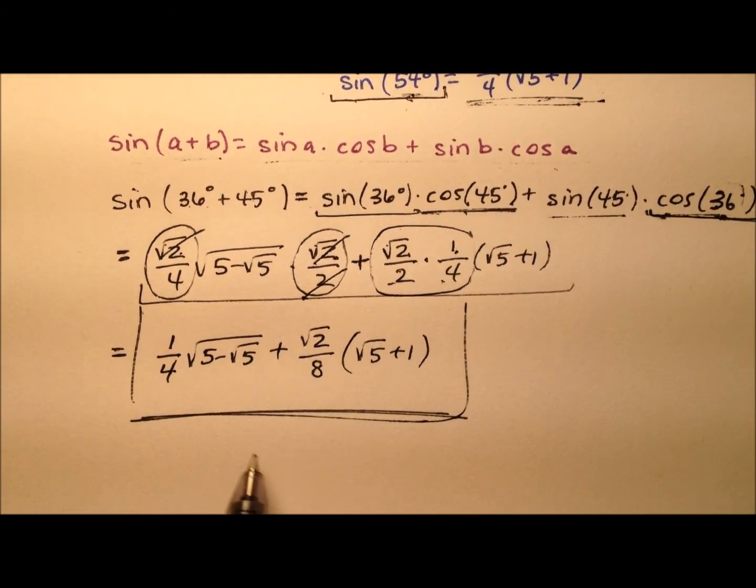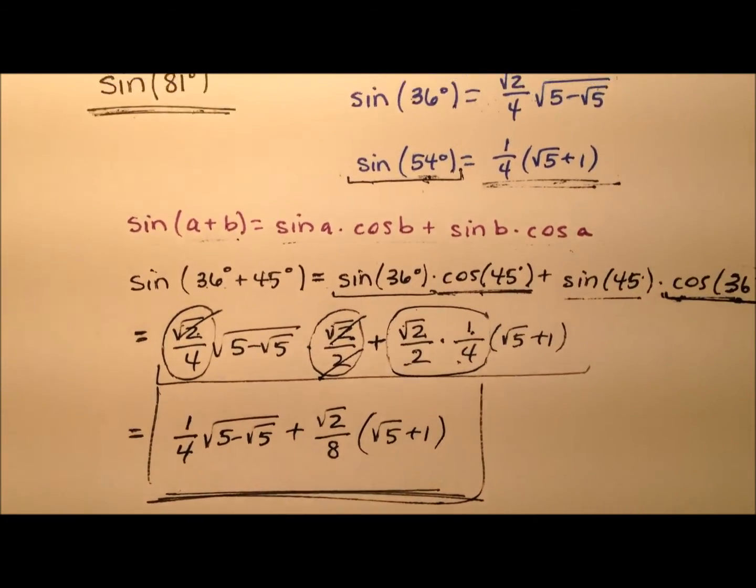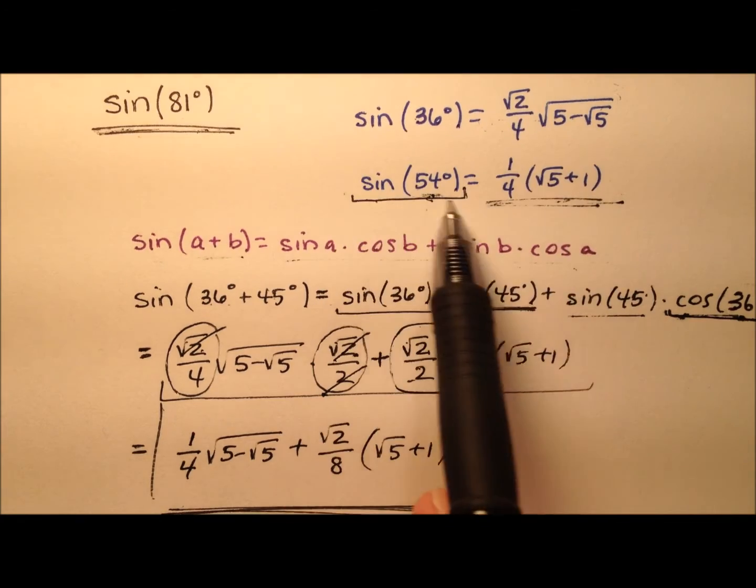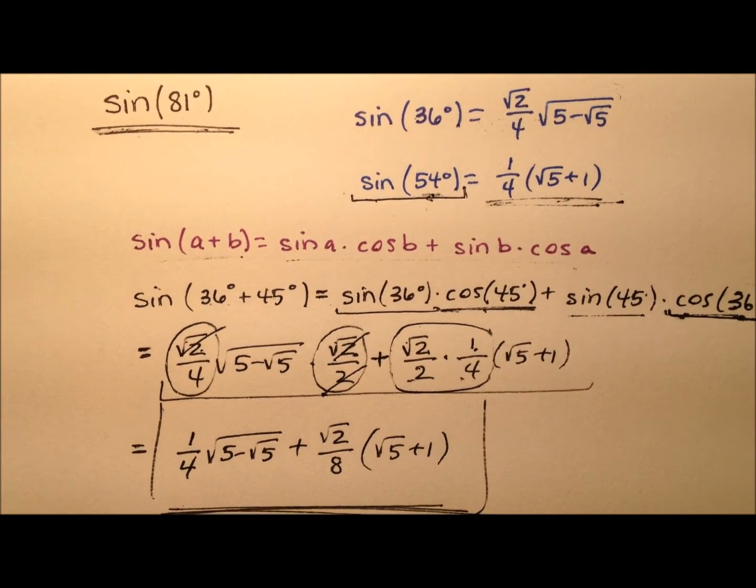So, we're saying then that here is our exact value for the sine of 81 degrees, and we employed these other two values and used a sum identity for sine to find that value.